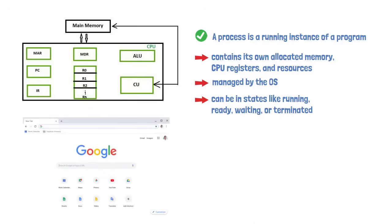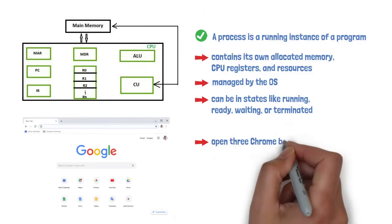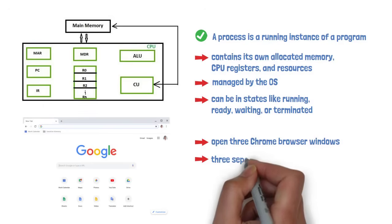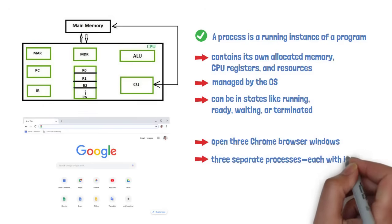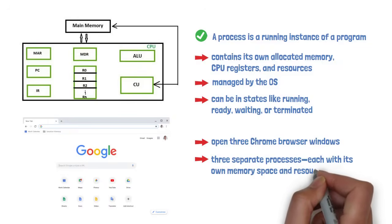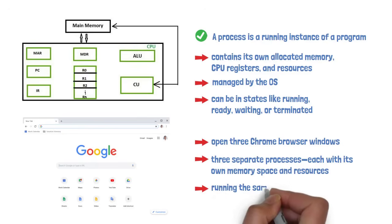For instance, when you open three Chrome browser windows, you've created three separate processes, each with its own memory space and resources, even though they're all running the same program.